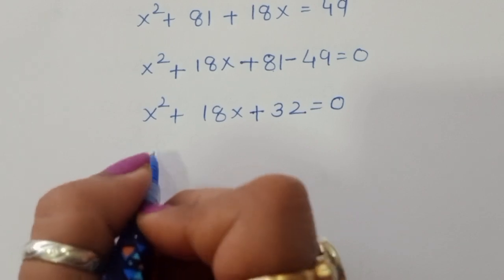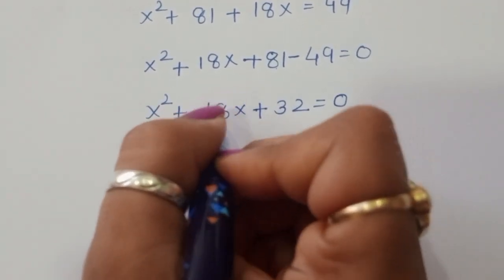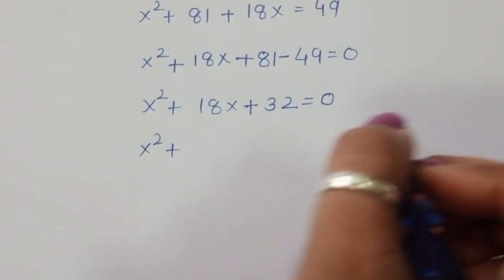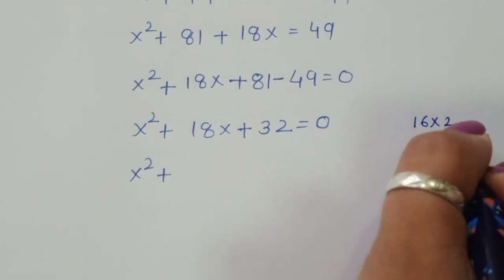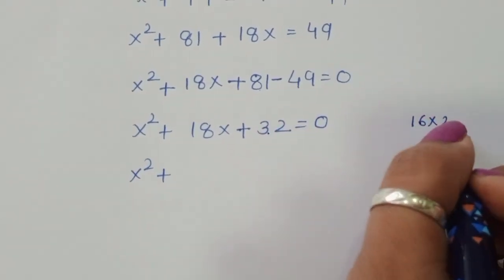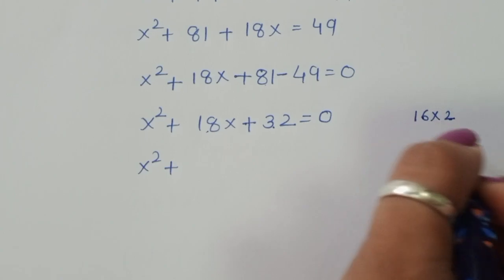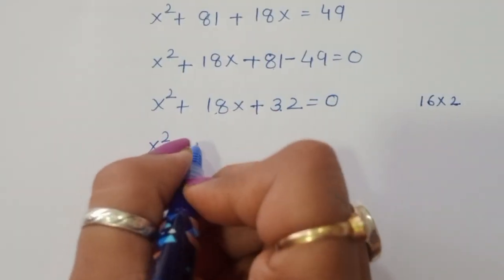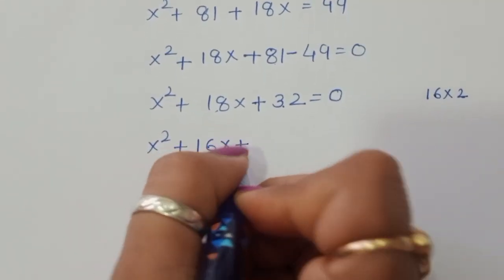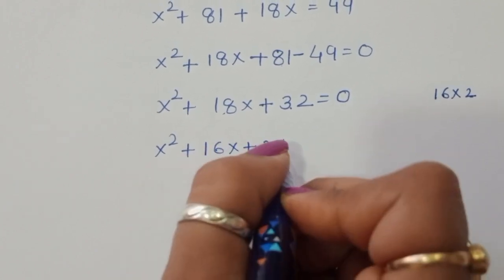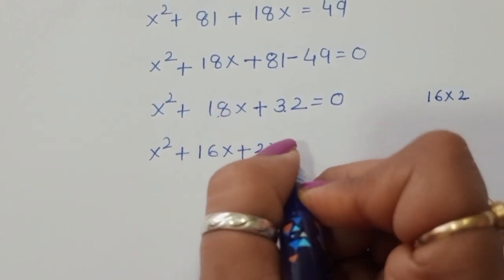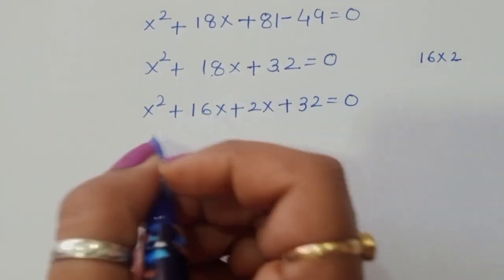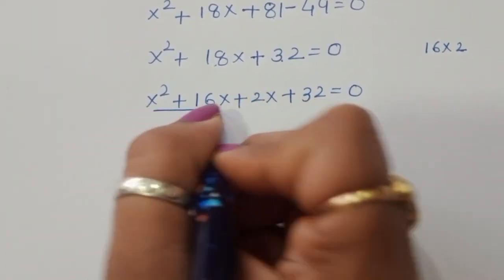Now for x square plus 18x plus 32 = 0, we split the middle term: 16 times 2 is 32, and 16 plus 2 is 18. So we write 16x plus 2x, giving x square plus 16x plus 2x plus 32 is equal to 0.